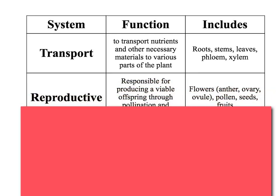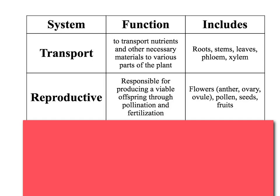The next system is the reproductive system. Its function is to produce viable offspring through pollination and fertilization — this is how the plant makes more of itself, just like the reproductive system in animals. It includes the flower, specifically three parts: the anther, ovary, and ovule. The ovule becomes the seed and the ovary becomes the fruit. And we can't forget pollen, which is what actually does the fertilization of the ovule.